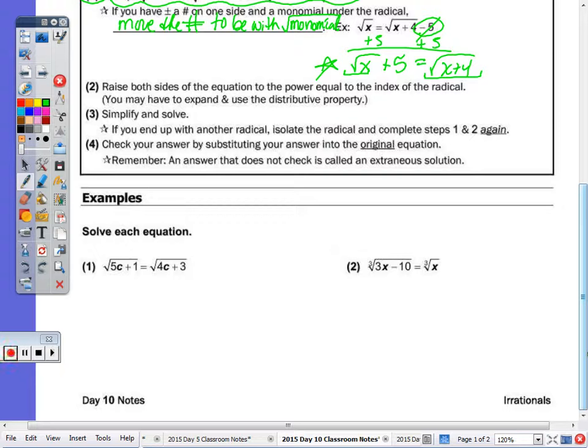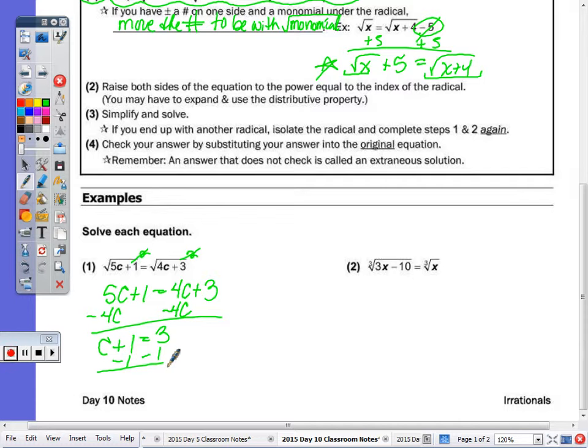So number one, this one's easier. When it's radical equals radical, what do we do? Square both sides. We just start by squaring both sides. It removes both the symbols. So we end up with 5C plus 1 equals 4C plus 3. Subtract the 4C from the 5C, subtract the 1 from 3. We get C equals 2. Let's just do a quick check in our head. On the left side, 5 times 2 plus 1. Does that equal 4 times 2 plus 3? Yes, 11. It checks.